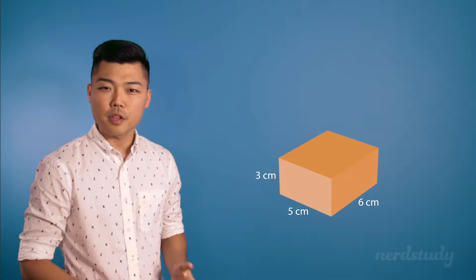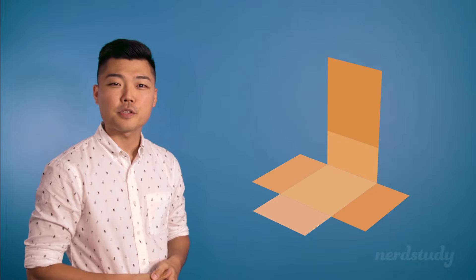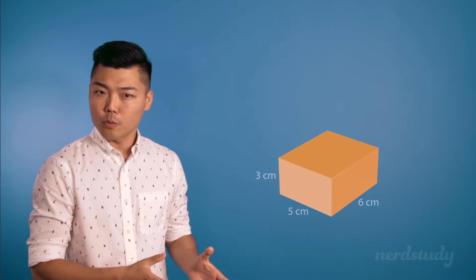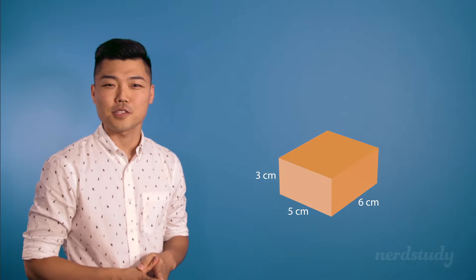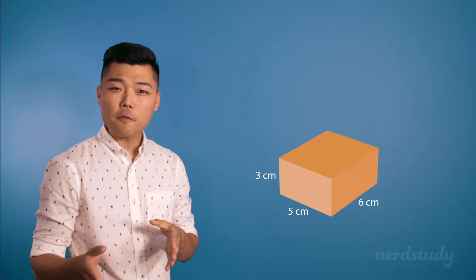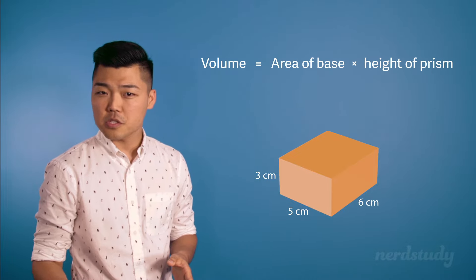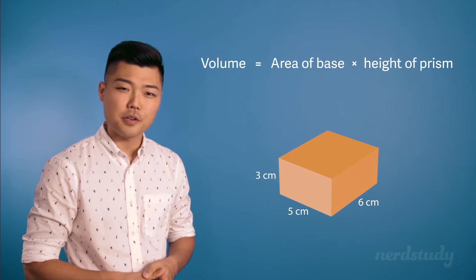To finish off our lesson, we'll look at how to find the volume of a rectangular prism that we saw earlier on. And again, remember that we got the surface area of this prism before. And now we're looking at the volume. These are two completely different things. So again, the formula for volume of a prism is area of base times height of prism.